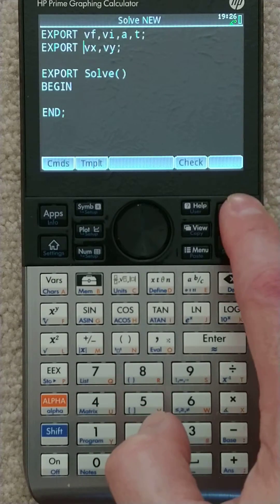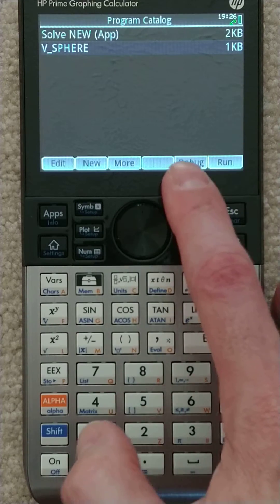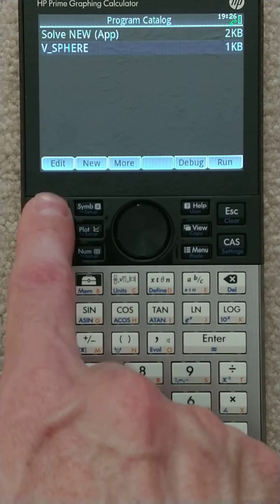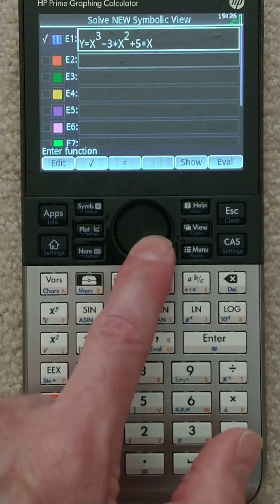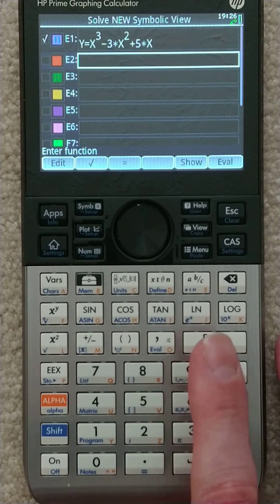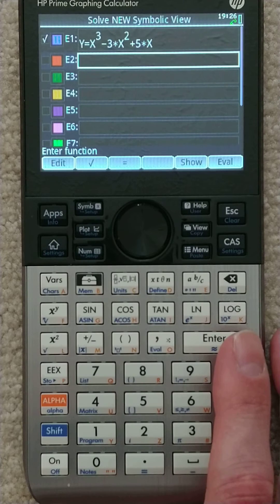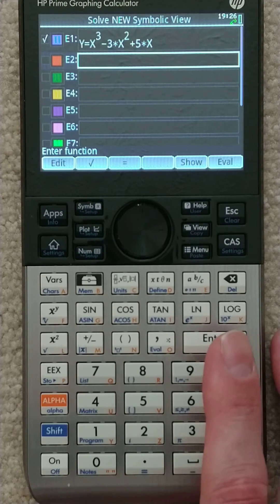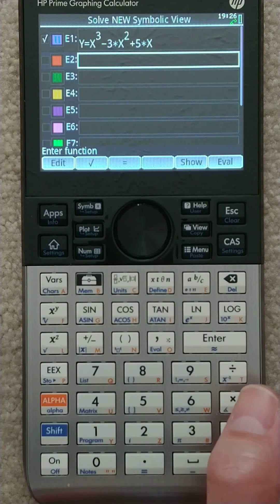We're good to go. I'm going to hit escape. And now, when we run it, really just make it less confusing. Go into apps and just hit solve new. Now when we do this, we can actually enter those variable names. So I could do my V final equals V initial plus A times T. It's time consuming to enter, so I'll spare you all that. And then we're good to go with that.